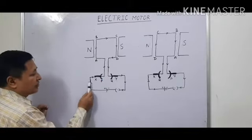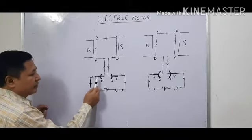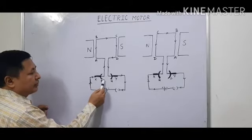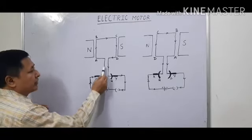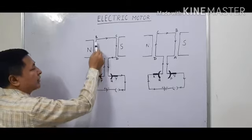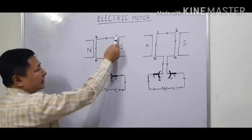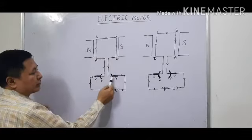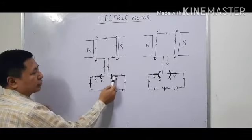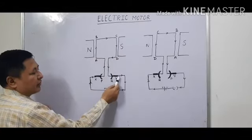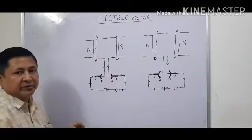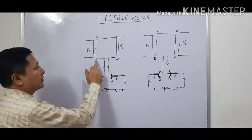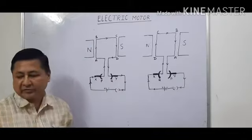Now let us see how the current enters the coil. The current starts from the battery, enters X, then joins the split ring P, then moves to A. Current flows from A to B, and then from C to D, then goes to Q and leaves from Y, completing the circuit.